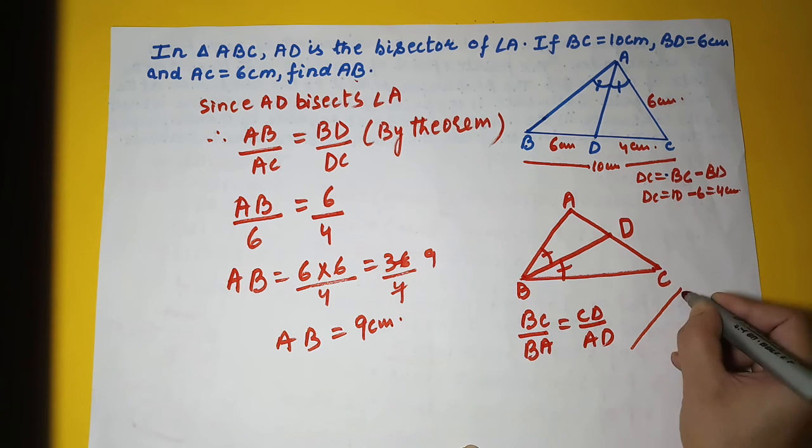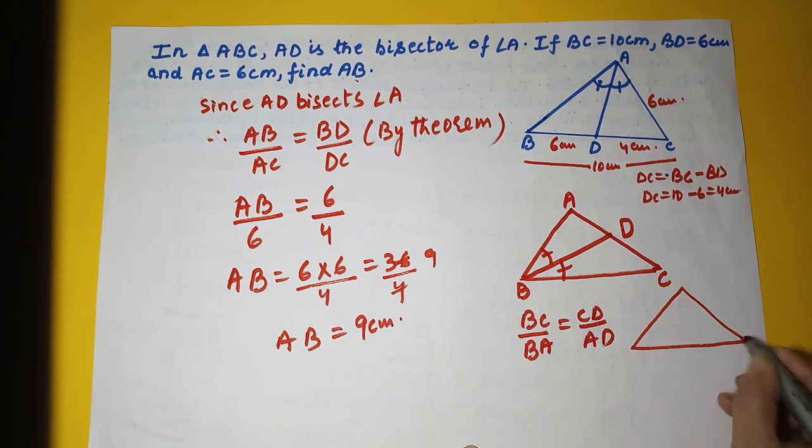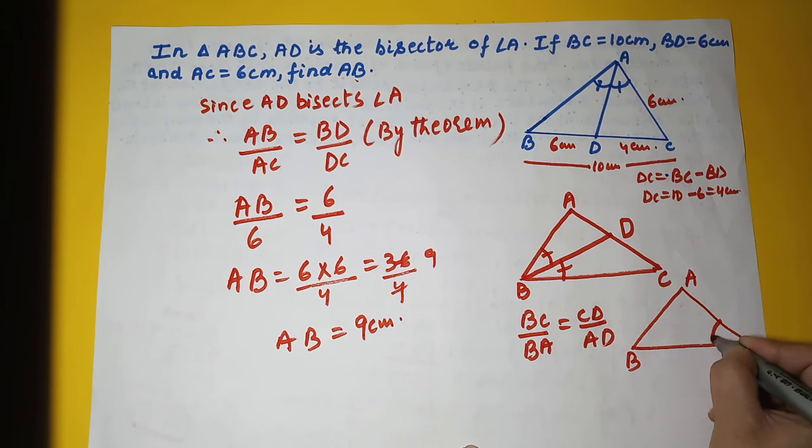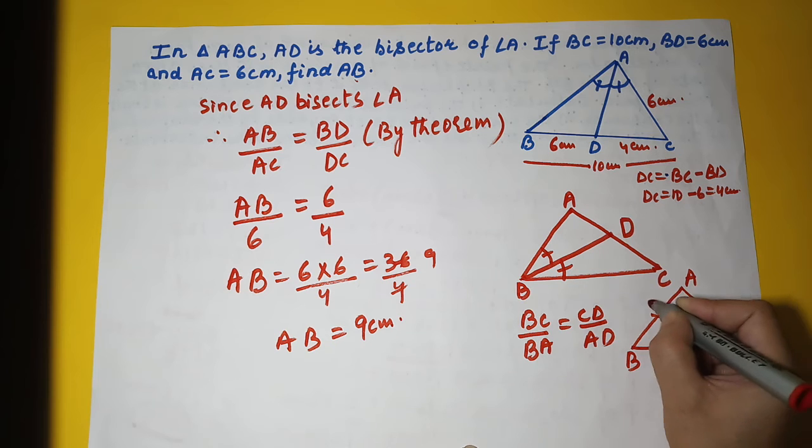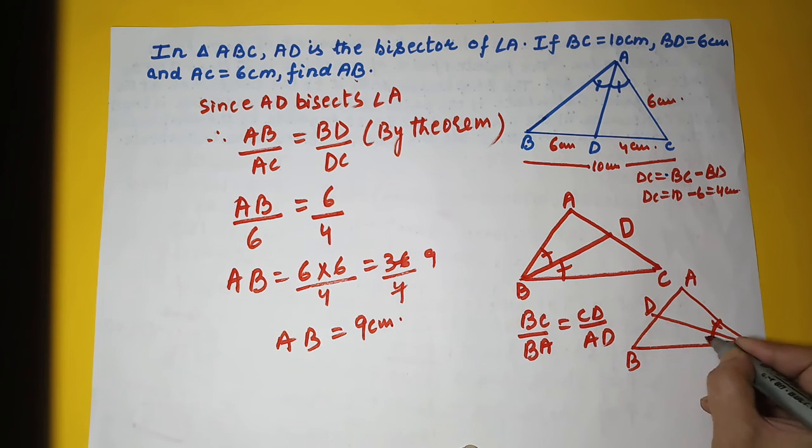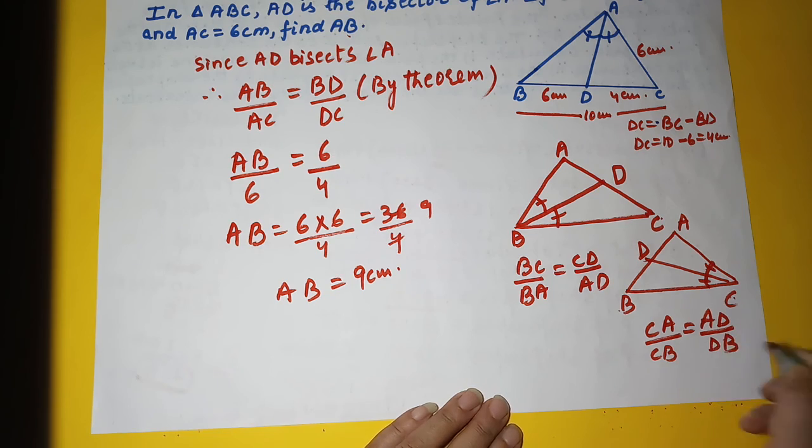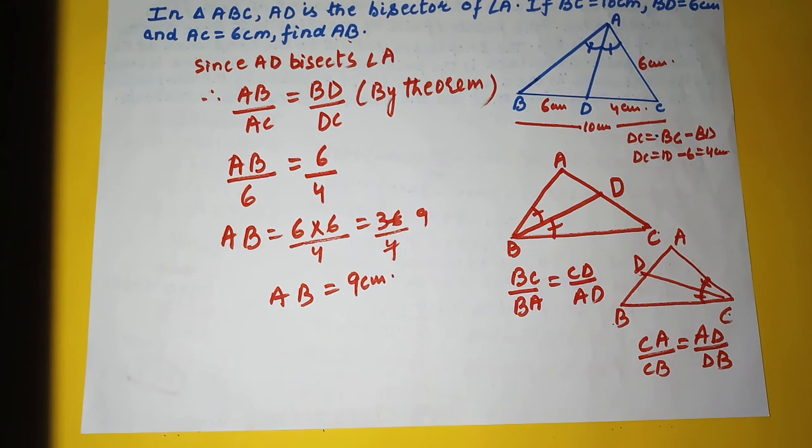Similarly, if I have a situation like this where this is A, B, and C, and this time I have CD as angle bisector of this angle C, then CA upon CB will be equal to AD upon DB. That's how you have to apply this theorem.